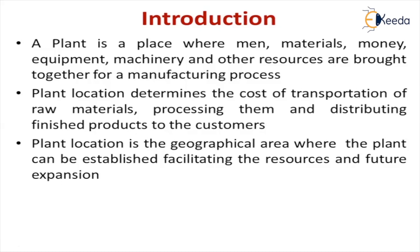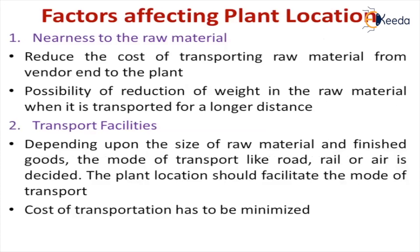In order to establish an industry, there are factors to be considered. The first one is proximity to raw materials. If the industry is established in a place where raw materials are available, it reduces the cost of transporting the raw material to the plant. Wherever minerals are available, the particular industry will be established in that place, because transporting minerals to the industry involves a transportation cost.